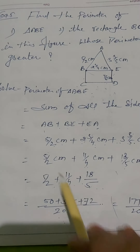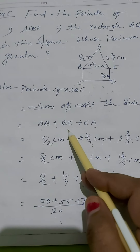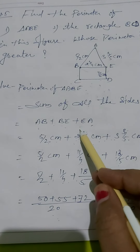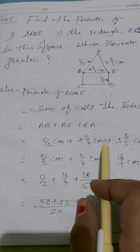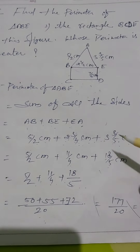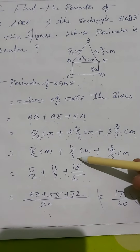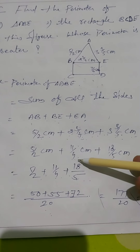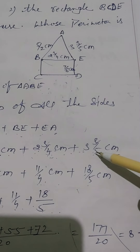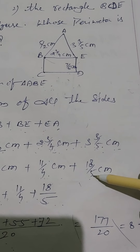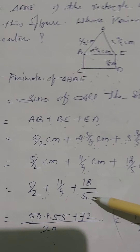The perimeter of triangle ABE is the sum of all its sides: AB + BE + EA. AB = 5/2 cm, BE = 2 and 3/4 cm (converting: 2×4 = 8, plus 3 = 11, so 11/4 cm), and EA = 3 and 3/5 cm (converting: 3×5 = 15, plus 3 = 18, so 18/5 cm). We now add 5/2 + 11/4 + 18/5.